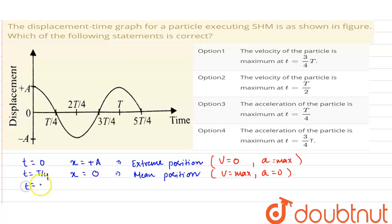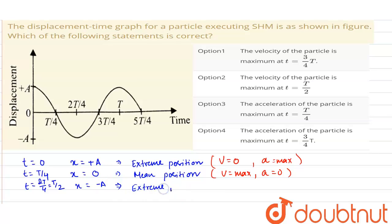At t = 2T/4, or T/2, the displacement is again maximum — that is, minus A. So it is at the extreme position, where velocity is 0 and acceleration is maximum.